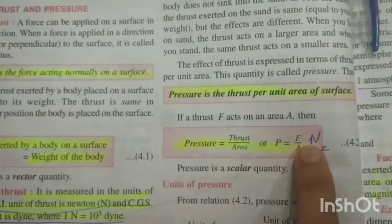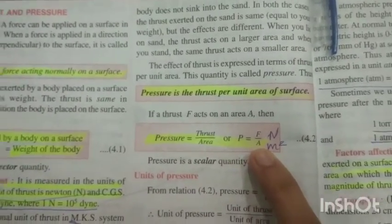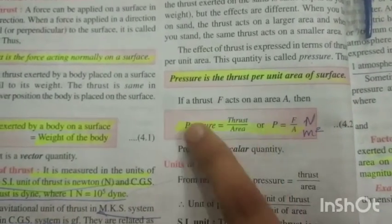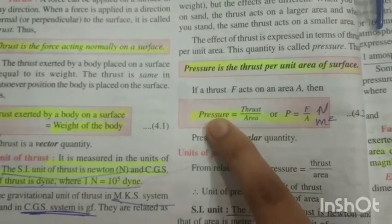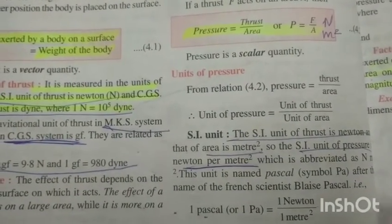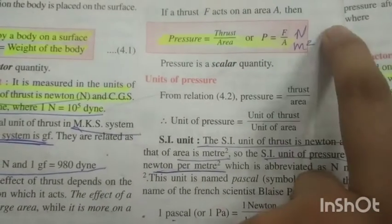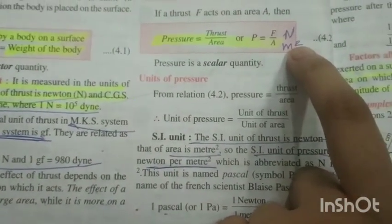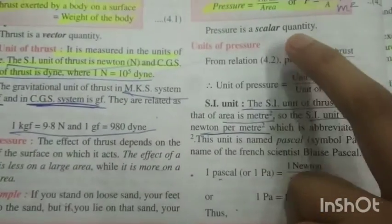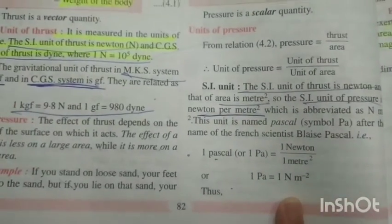The SI unit of force is Newton and the SI unit of area is metre squared, so the SI unit of pressure is Newton per metre squared — basically Newton metre to the power of minus two, because the metre squared goes to the denominator. Pressure is a scalar quantity — this is very important to remember.